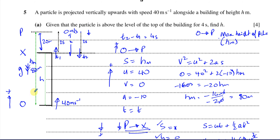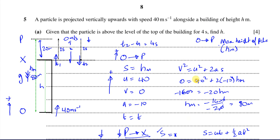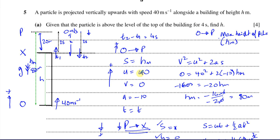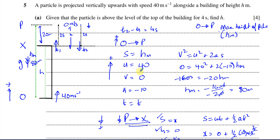We know the total distance is 80 meters. So H = 80 − 20 = 60 meters. That's the answer: H equals 60 meters. There are other ways of doing it as well which would be a bit more algebraically challenging. I'll show you another way just to help you understand the situation.